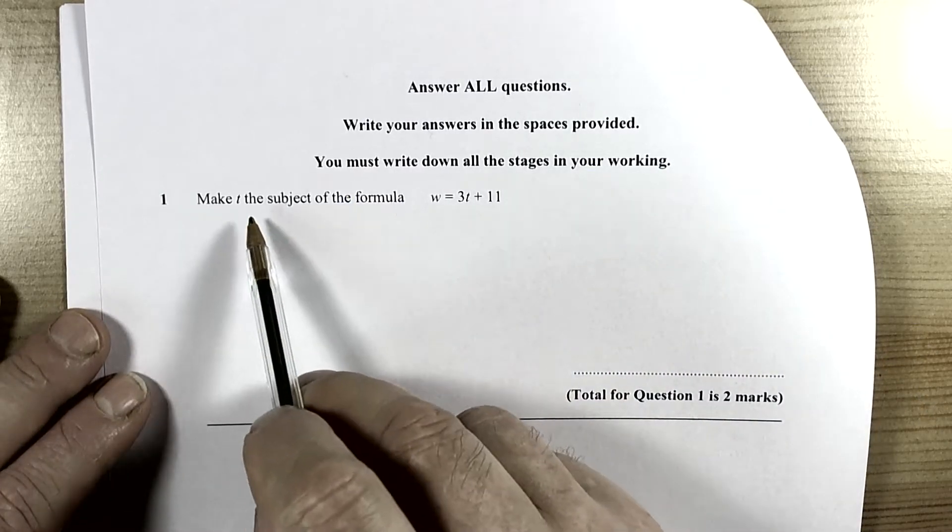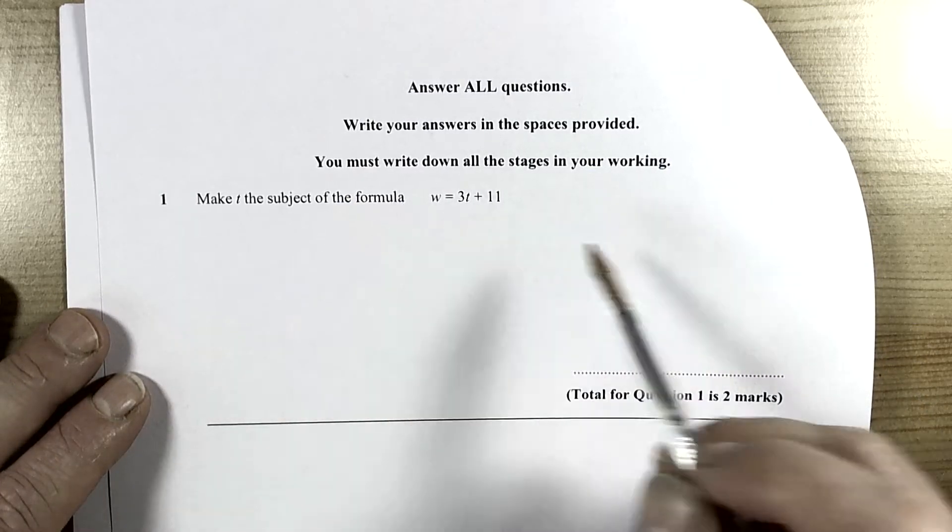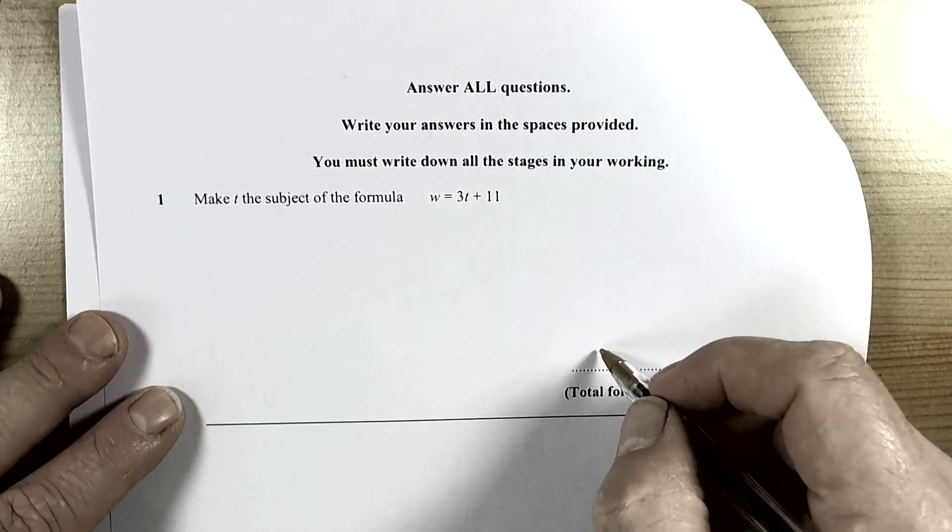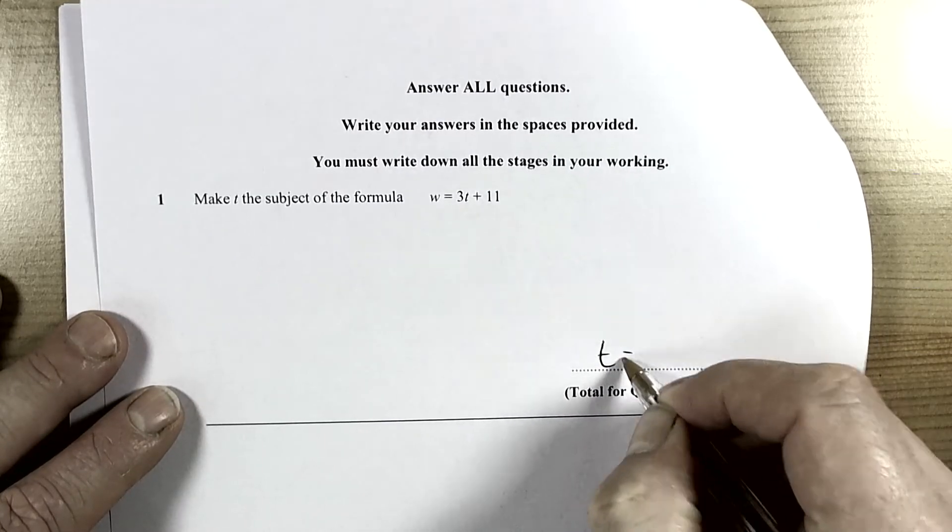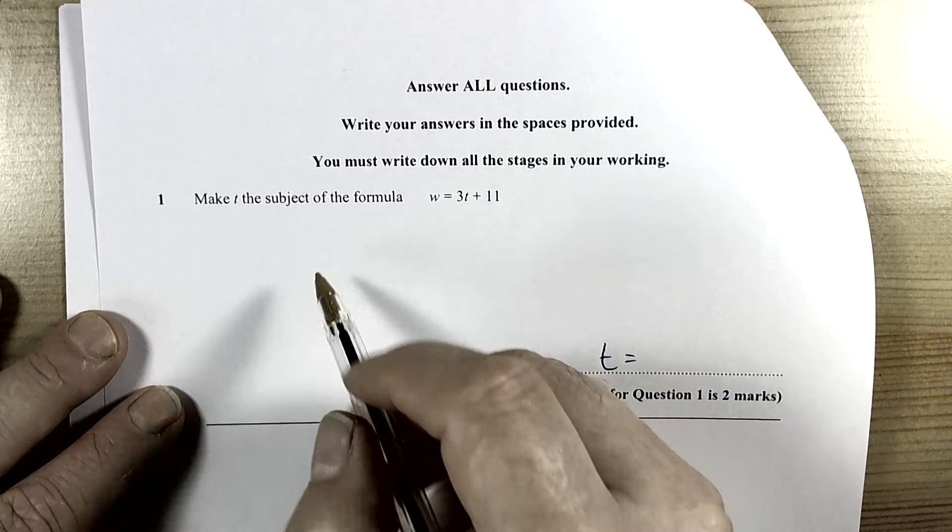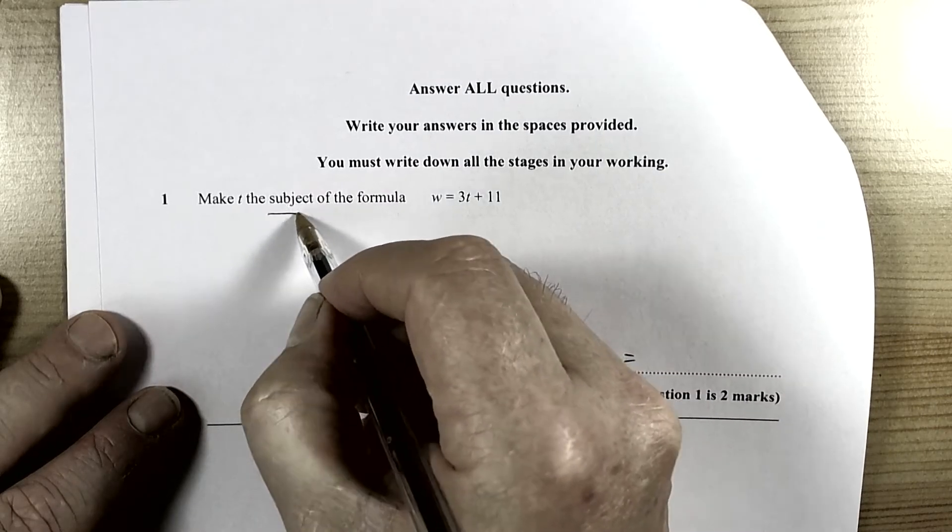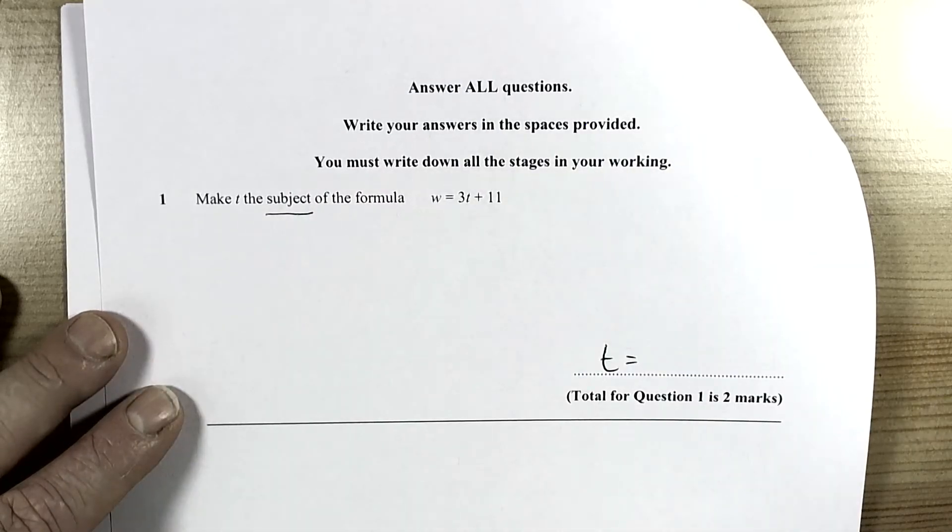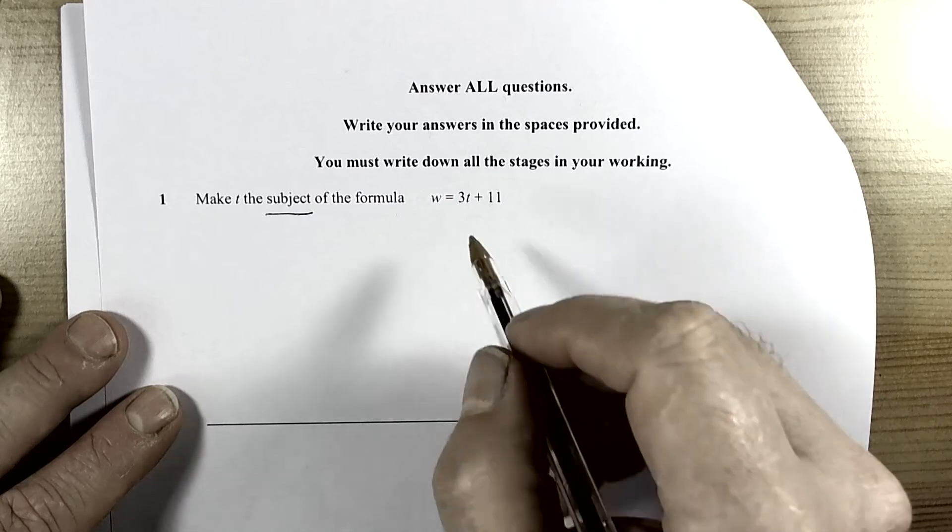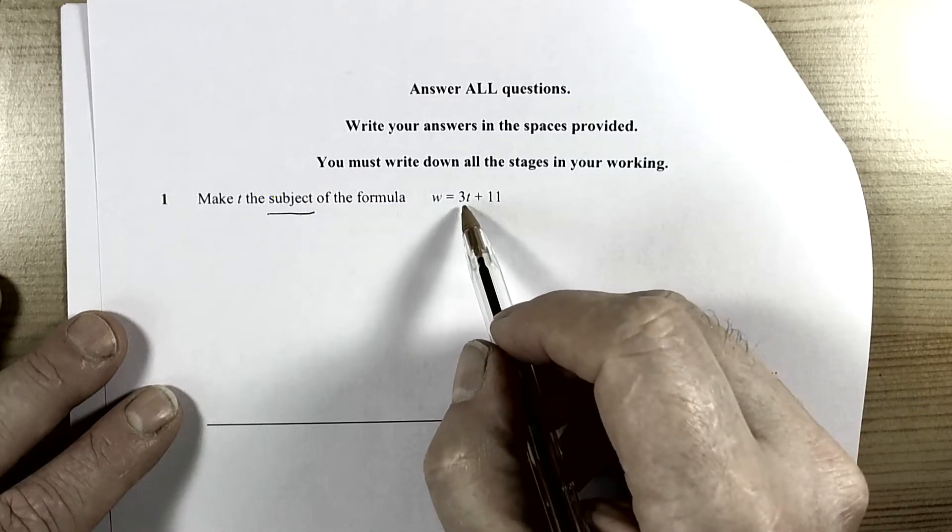We have a question here that looks at making t the subject of the formula, so that means our answer line will need t equals. When we are making something the subject, remember that means rearranging to leave t on its own and positive, so we just want one of them.